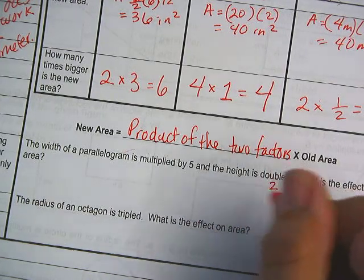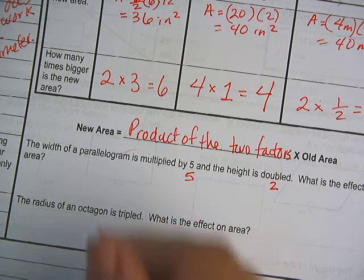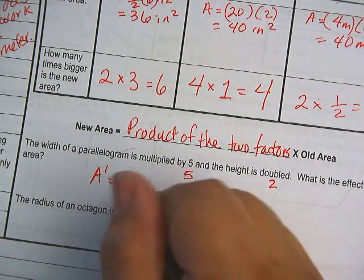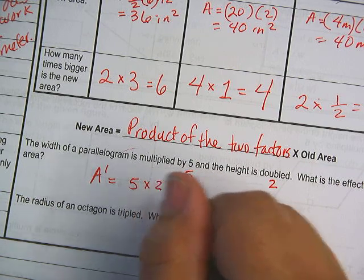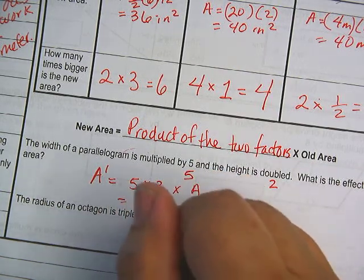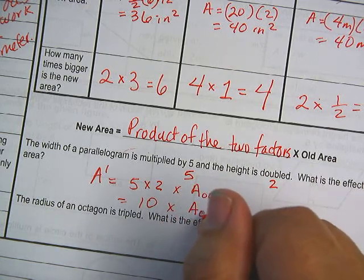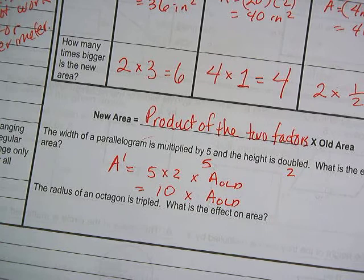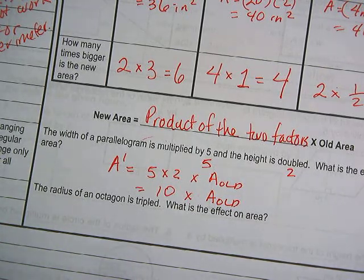So here we have a width of a parallelogram. It's multiplied by 5 and the height is doubled. So that's a factor of 2 and that's a factor of 5. So what is the effect on area? Well, your new area is going to be 5 times 2 times your old area. Or 10 times your old area. It's 10 times bigger.